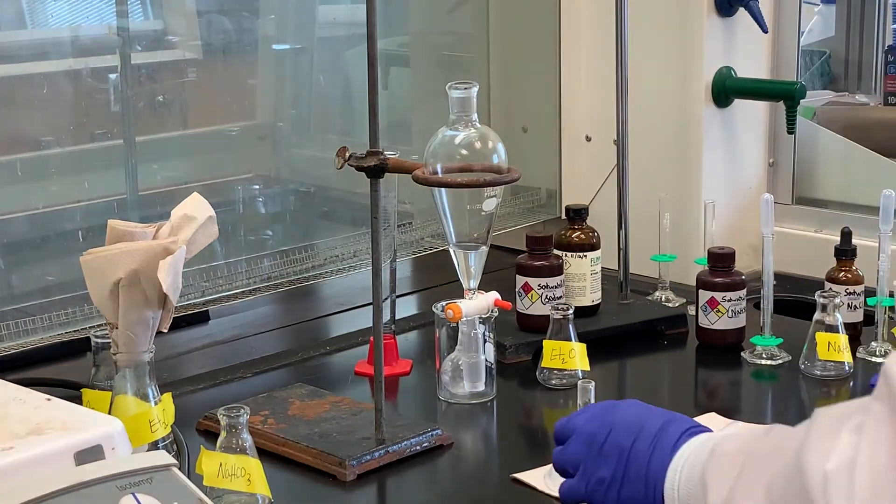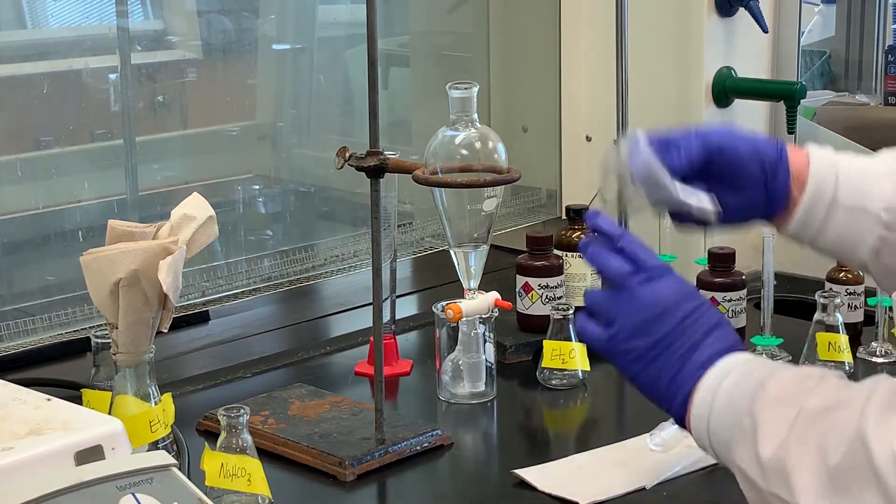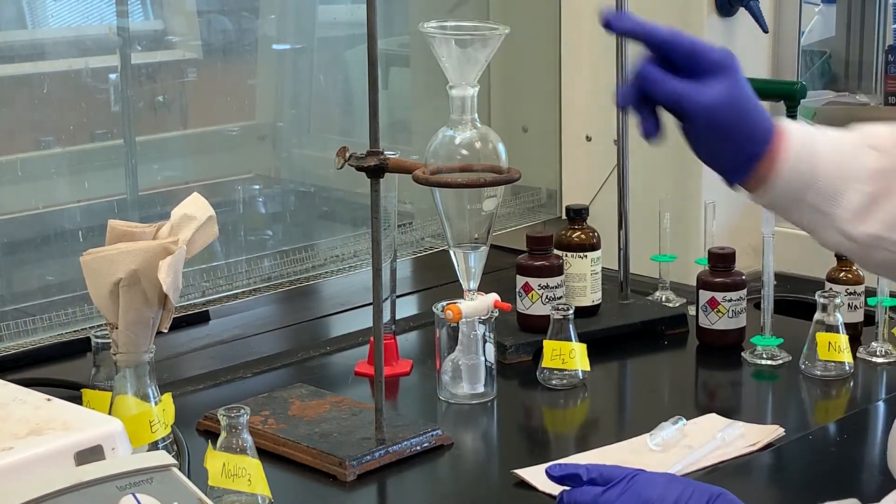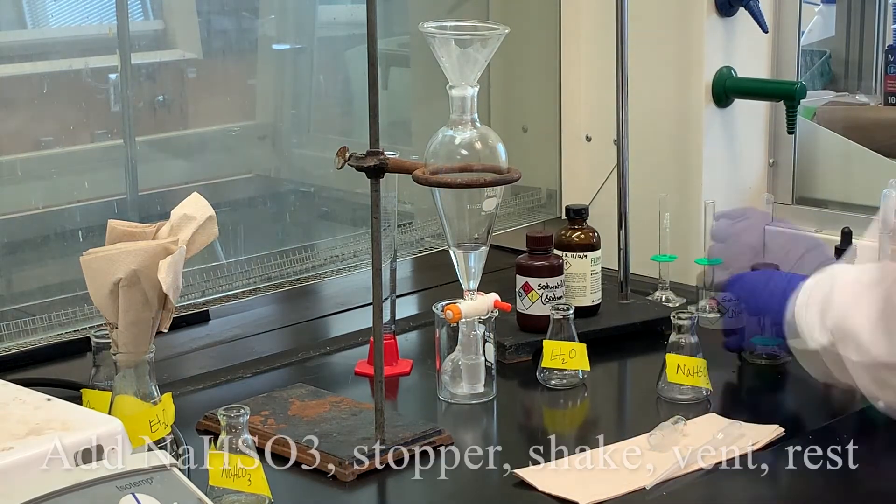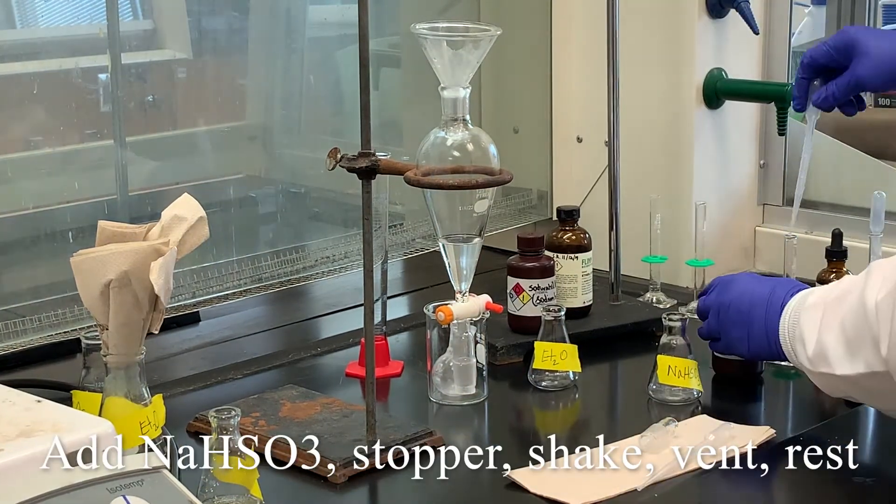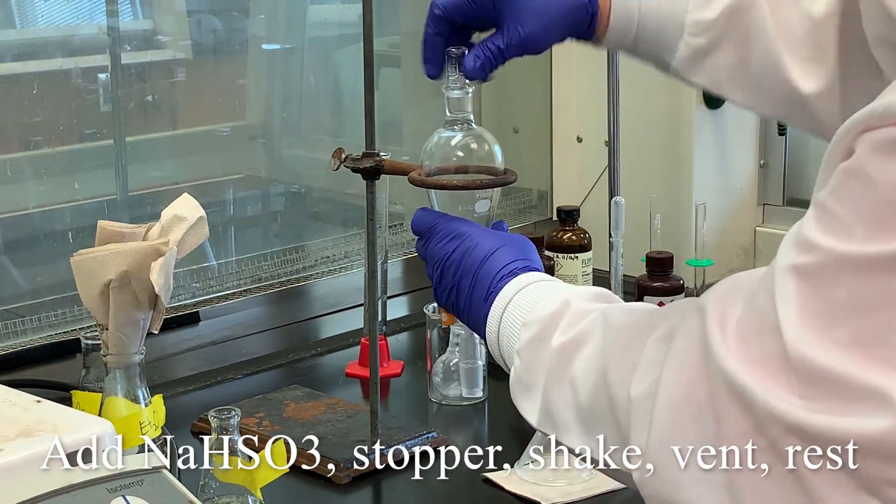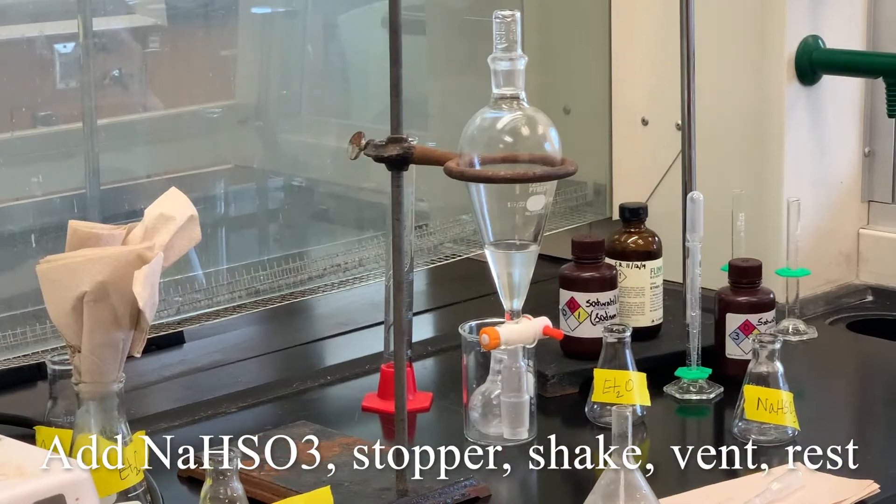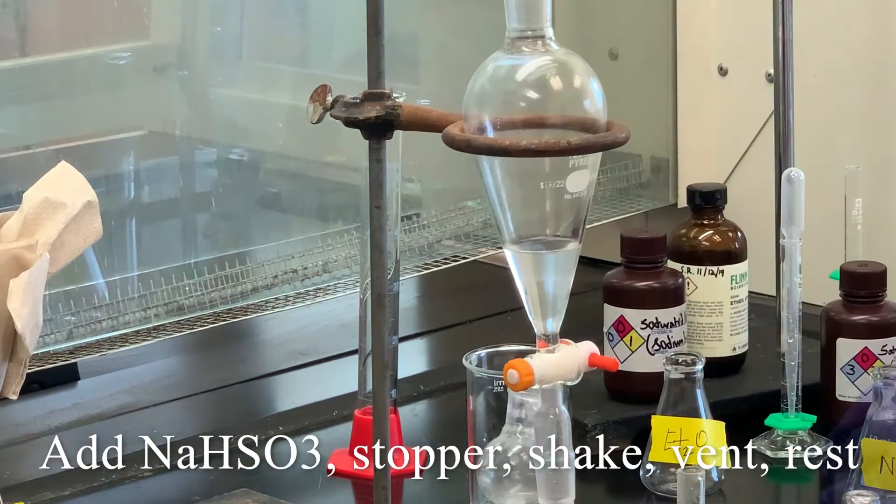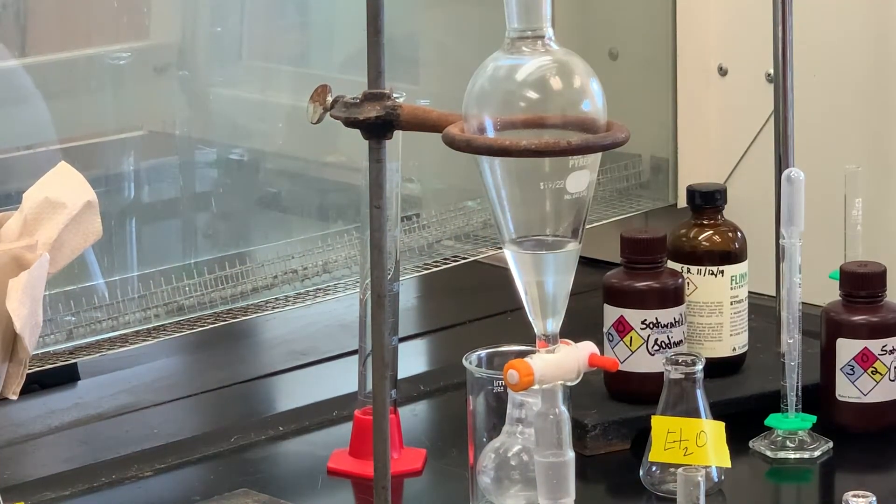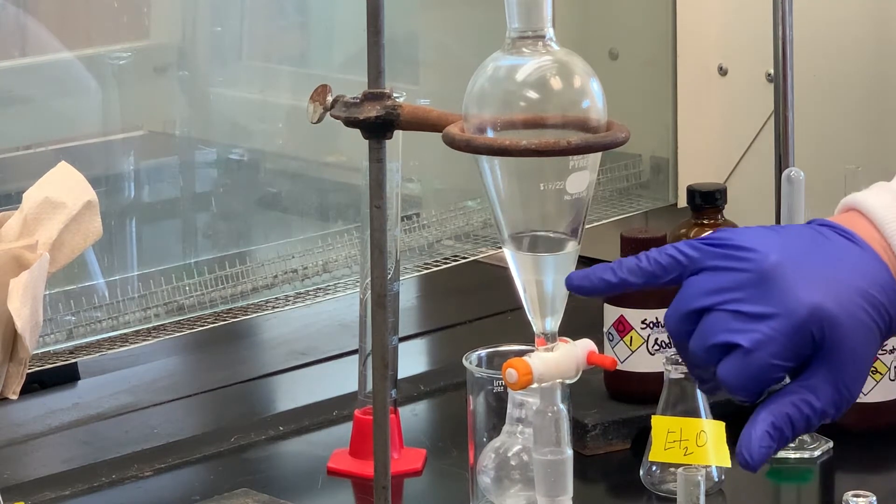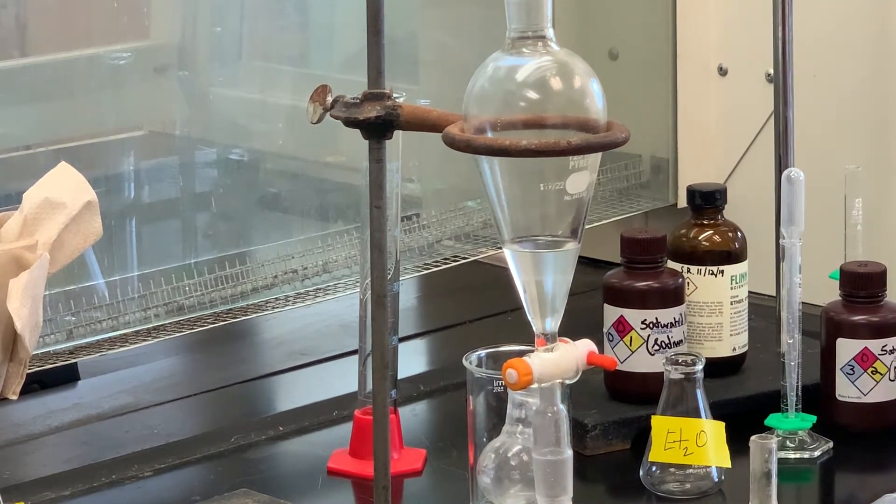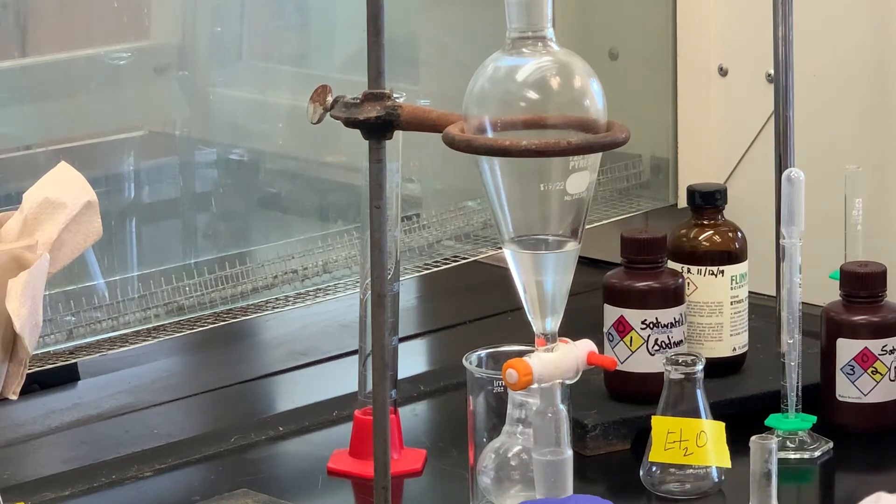Now I'm going to add to the ether layer five mils of sodium bisulfite. All right, we've got separation. You can see the line here. So we're going to drain off the aqueous sodium bisulfite washing.